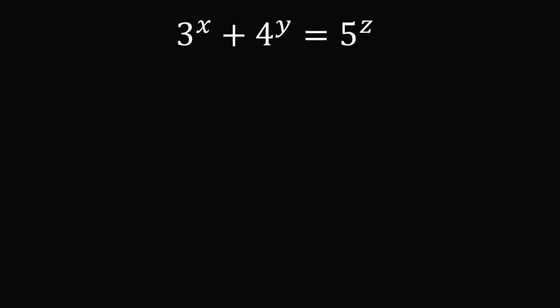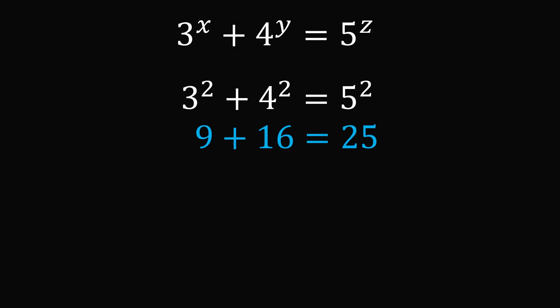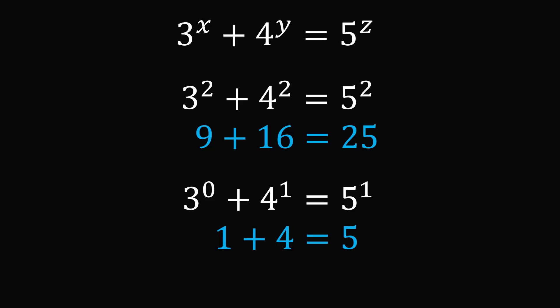If you experiment with the numbers, you might have come across the following two solutions. 3 squared plus 4 squared is equal to 5 squared — that's a famous right triangle triple. And 3 to the power of 0 plus 4 to the power of 1 is equal to 5 to the power of 1. If you found these two solutions, congratulations! You have intuitively found the only two solutions to this equation for integers x, y, and z. But for a mathematician, that's not good enough — one needs to prove that these are the only two solutions.